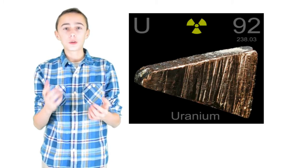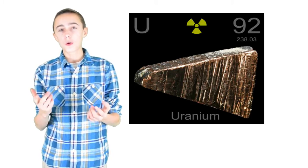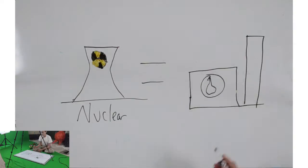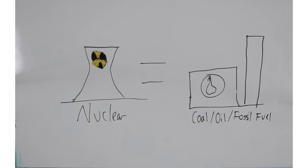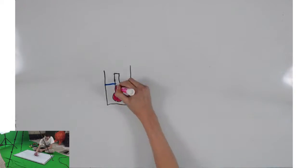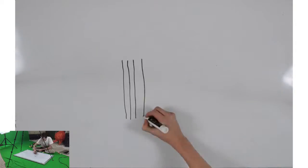Uranium will eventually run out in about 230 years. It is important to understand how a nuclear reactor works. Nuclear power is actually the same as fossil fuel or coal plants in the matter where electricity is generated from steam spinning a turbine. It's how the water is heated to create steam that is different.